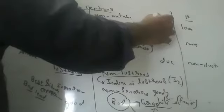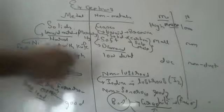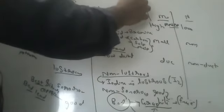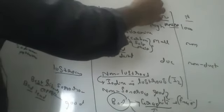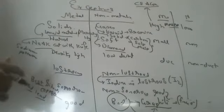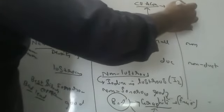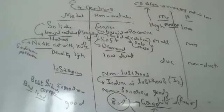Metals generally have high melting point and high boiling point because they are solids and require high temperature to melt or boil. But except cesium and gallium — these two metals have low melting points. They can even melt in your palms by taking the heat from your body. Cesium and gallium melt in your palms because they have low melting points.